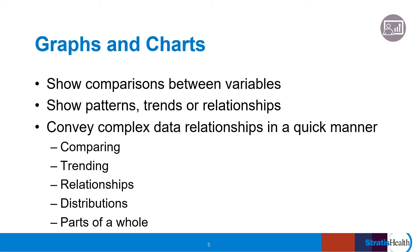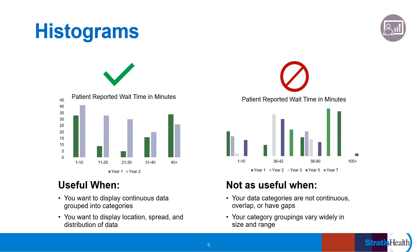A histogram is a graphical representation that displays data through bars to show the frequency of numerical data. For quality improvement, histograms are used to present the data distribution spread and shape — that is, where it is centered, how spread out it is, and whether it is symmetric or skewed in one direction. In this example on the left, we have counts of patient-reported wait times in minutes, stratified by years. A histogram is useful here because the unit of minutes is a continuous variable, and viewing the data in this format allows us to see the distribution and spread of wait times year over year. For year one, most patients reported a wait time of either 1 to 10 minutes or 40 plus minutes.